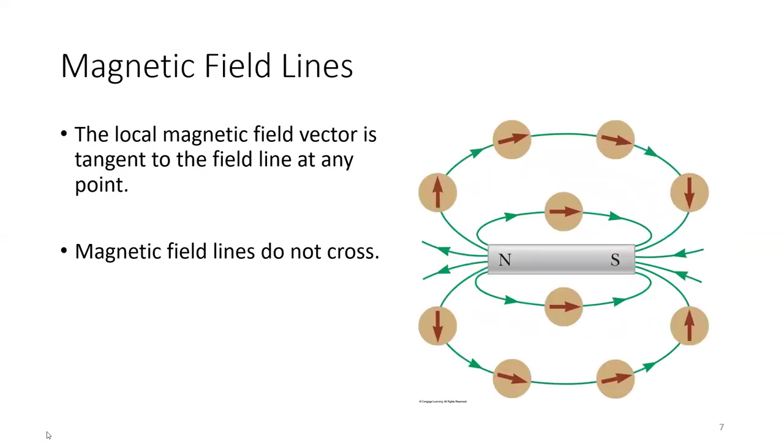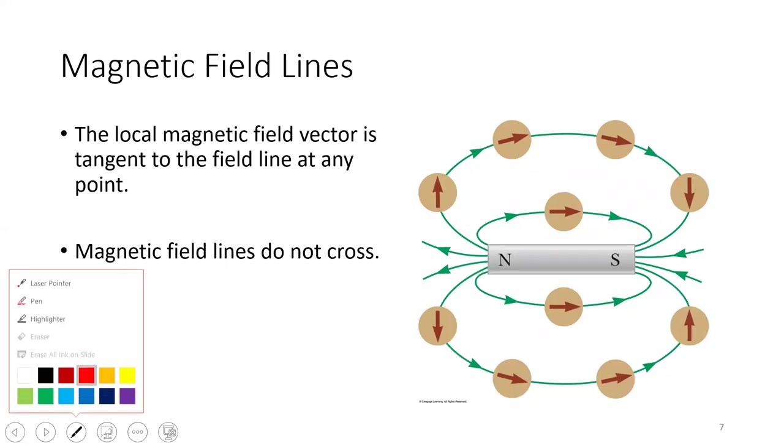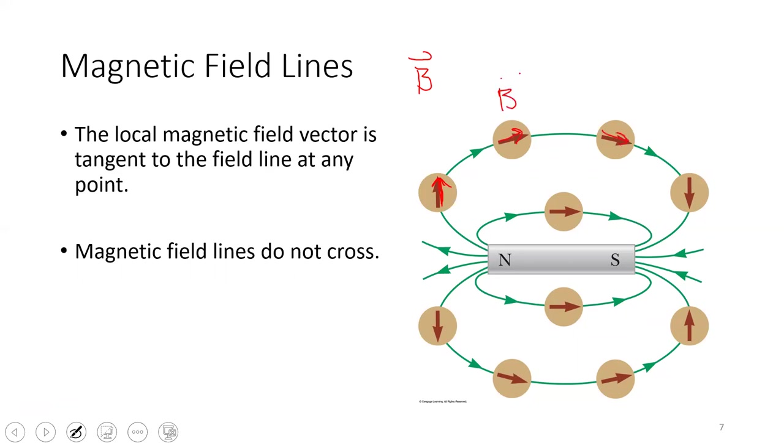The magnetic field vector is tangent to the field line at any point. This is similar to what we saw with our electric field. A magnetic field we denote usually with the letter B, and because it is a vector, we'll give it the little vector arrow at the top. In this image to the right, you see these little circles with arrows. They are telling you that at any given point, that is the direction of our magnetic field. The local magnetic field vector is tangent to the field line at any point.